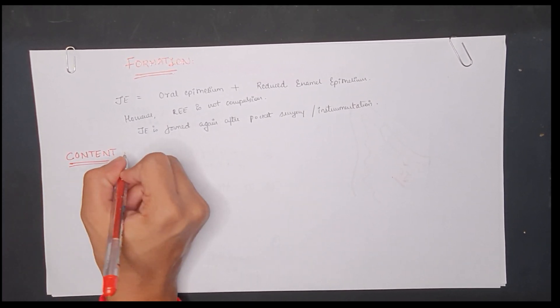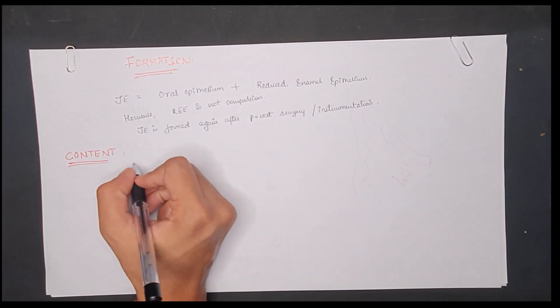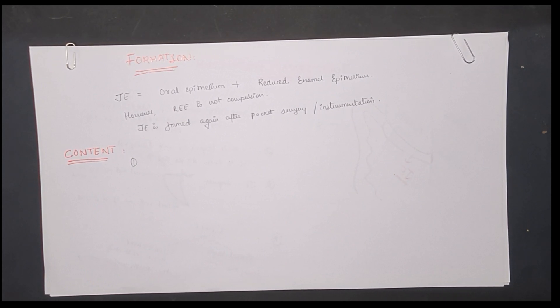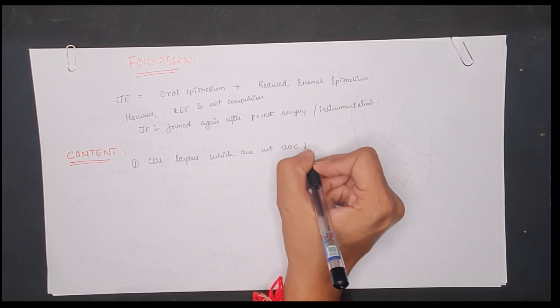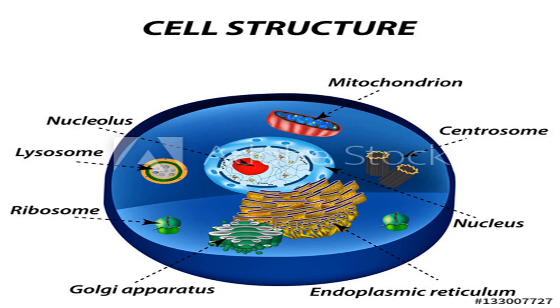Now, let's discuss the content of junctional epithelium. These cell layers that do not appose the tooth exhibit numerous other elements like ribosomes, lysosomes, Golgi complex which are presumably phagocytic, and cytoplasmic vacuoles.